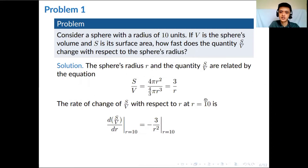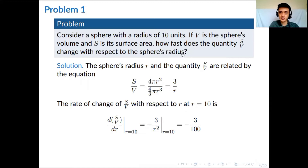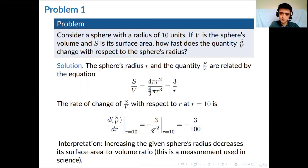We evaluate this at r equals 10, since the given radius is 10 units, giving us negative 3 over 100. That is the rate of change of the ratio S/V with respect to the current radius. To interpret the result: since d(S/V)/dr equals negative 3 over r squared, as the radius increases the rate of change is negative, meaning increasing the sphere's radius decreases the ratio of surface area to volume. We actually use this measurement in science.